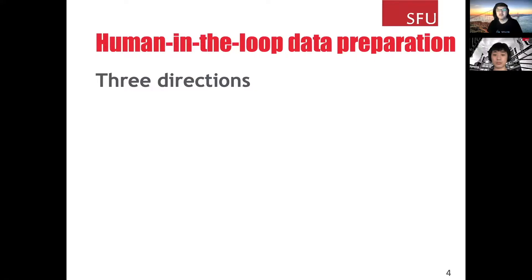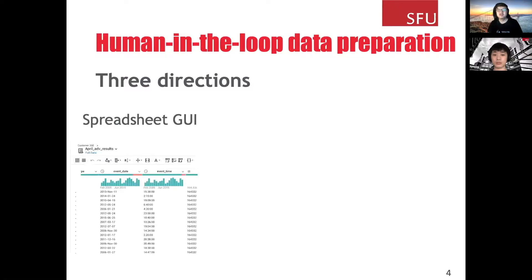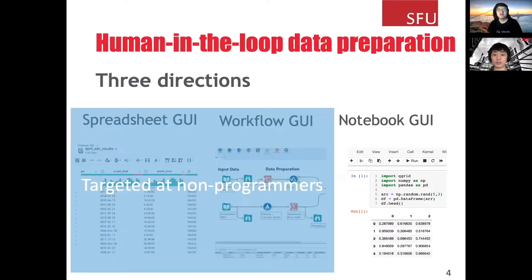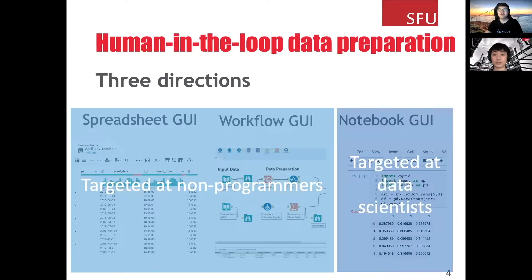To solve the data preparation problem, we need to get humans involved. Then we need to think about how humans should interact with the system. Based on the interaction interface, existing solutions can be categorized into three directions: Spreadsheet GUI, workflow GUI, and notebook GUI. We believe the three directions will co-exist in the future, since they are targeted at different users. Spreadsheet GUI and workflow GUI are targeted at non-programmers, and notebook GUI is targeted at data scientists. Our work is focused on notebook GUI direction.